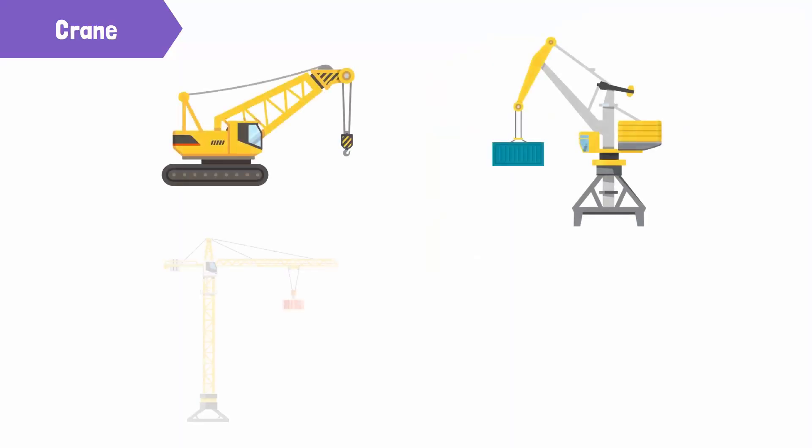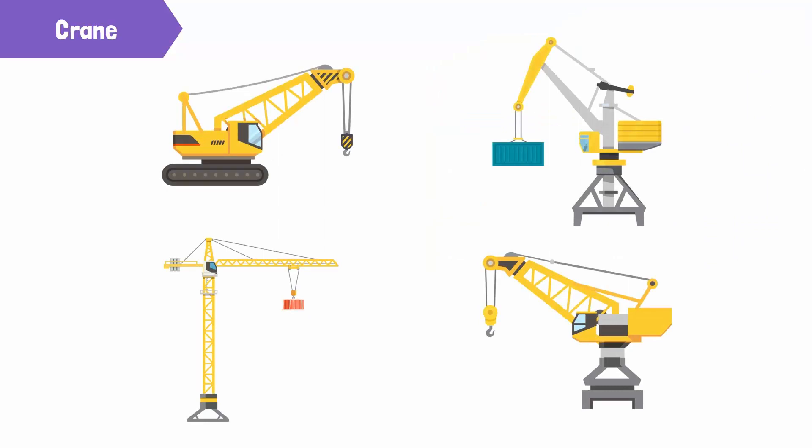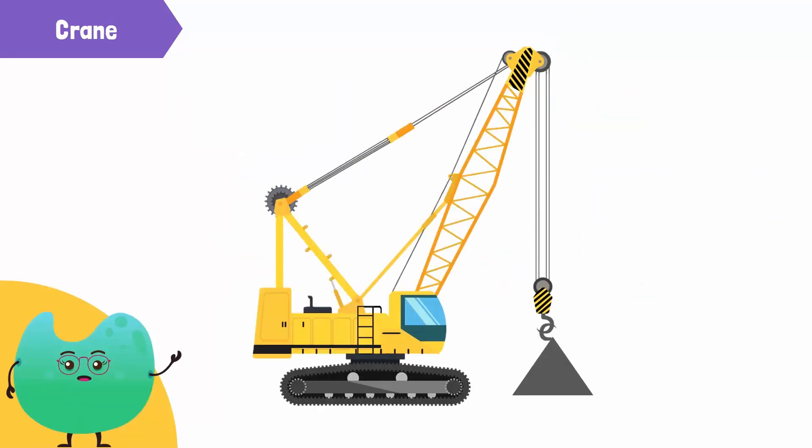Cranes come in different shapes and sizes with different load-lifting abilities. But how do they do this? What system do they use? A crane has a system of fixed pulleys and movable pulleys. A rope passes over these pulleys.